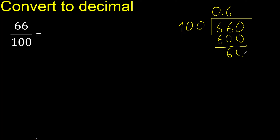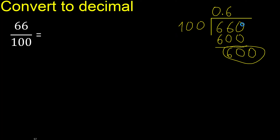Subtract 60. There is no number that goes down, therefore complete — always complete with 0. Point. Here is 600.